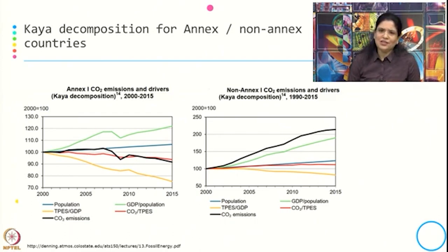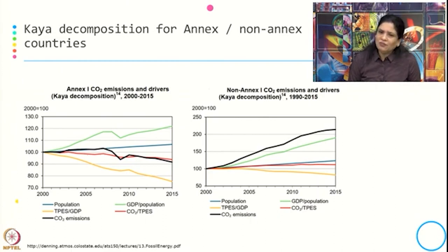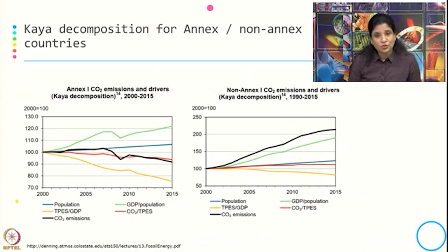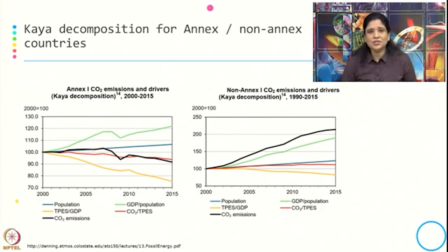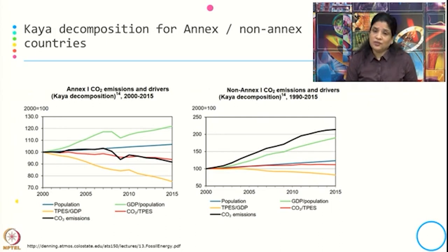Coming to the non-NX CO2 emissions and drivers, the population is increasing, showing an increasing trend from 2000 to 2015, so CO2 emission is also showing an increasing trend. The major factor is again GDP per population, but more prominent here is that in the case of non-NX countries, more energy-efficient technology is not being used, and the types of fuel being used are more carbon-intensive. This Kaya decomposition can be done country-specific, at different scales — sometimes at the sector level and sometimes at the industry level.